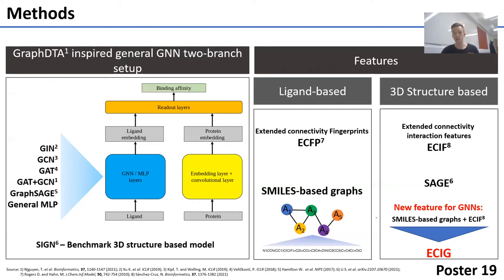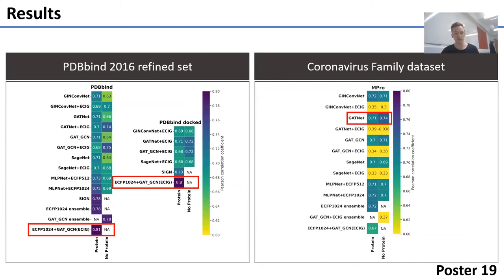Our graph neural networks are ligand-based in a two-branch setup inspired by GraphDTA, where the protein side is encoded as a 1D sequence, so no 3D structural information is required. We are benchmarking those models against the SIGN method, which is the best structure-based method we could find tested on PDBbind. For feature sets, we use ligand-based features for graphs, and we came up with a new contact-based graph called ECIG, heavily inspired by the extended connectivity interaction features (ECIF) fingerprints. On the results, the PDBbind refined set 2016 data shows the best model is a bagged model between ECFP fingerprints and our ECIG graphs with a Pearson correlation coefficient of 0.81. Importantly, it does not lose performance when testing on docked structures, which is normally the biggest disadvantage of structure-based methods.